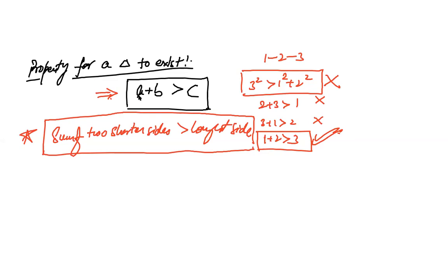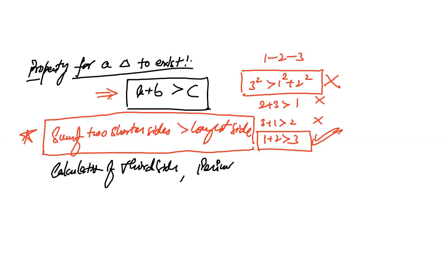Whenever the question expects you to calculate the third side or the perimeter of a triangle, you always have to test whether the calculated side is acceptable as per this property. The question will never explicitly prompt you to check this property — recognizing when to apply it is your job.